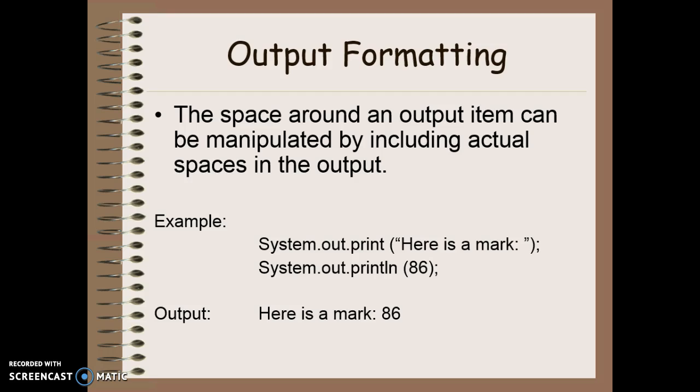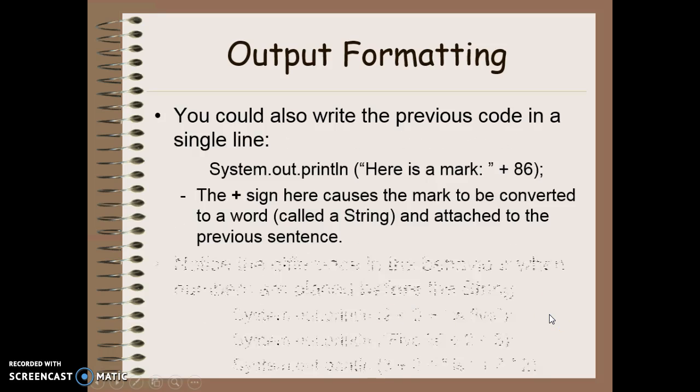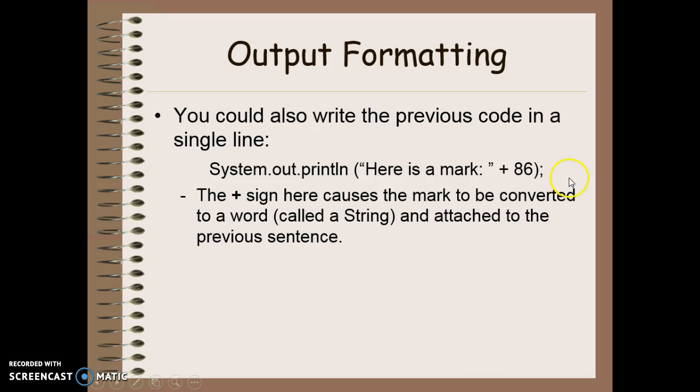But sometimes we may want to actually format our output so it looks a little bit nicer. So we can do this by a number of ways. The first one is to actually include actual spaces in the output to make things look nice. So I can say print, include a little space here, and the next line of code says to print the 86, I have a little space included here so it's not all mashed up together. I could also write the previous line of code in a single line like this where I say please enter a mark, include the little space plus 86. The plus sign here concatenates the two pieces of data together. What it basically does is convert this numerical data into a string and then attaches it to the previous sentence for output.